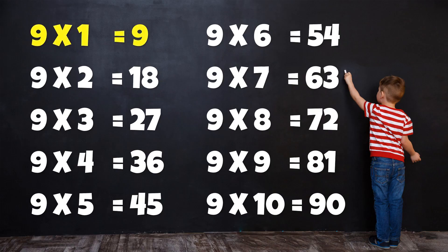Table of 9: 9×1=9, 9×2=18, 9×3=27, 9×4=36, 9×4=44, 9×6=54, 9×7=43, 9×7=53, 9×8=72, 9×9=81, 9×10=90.